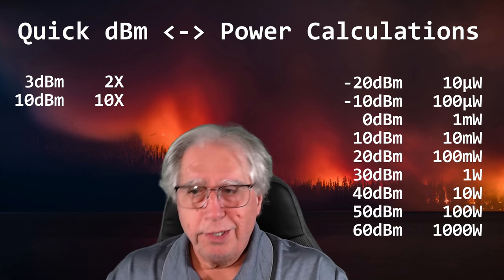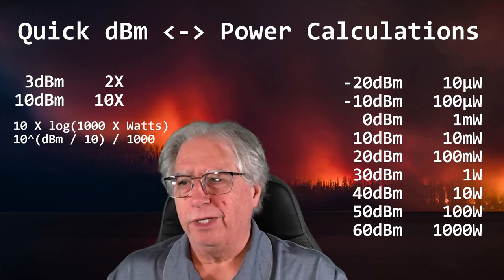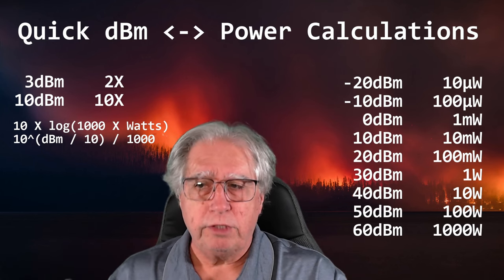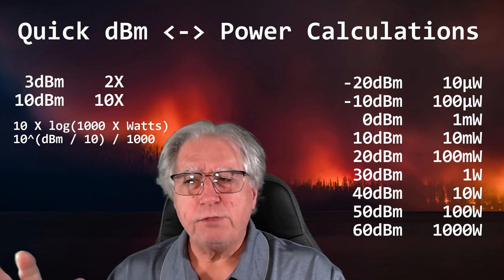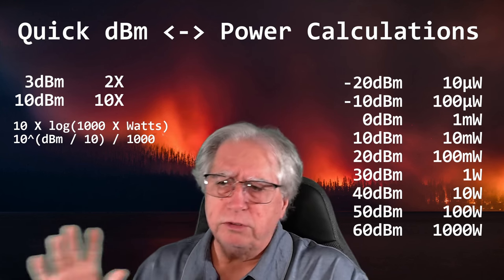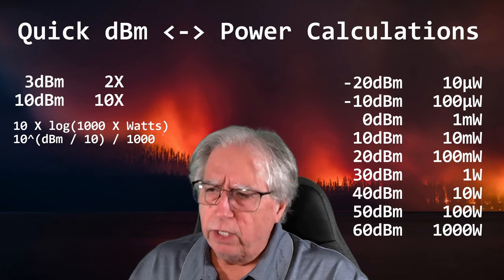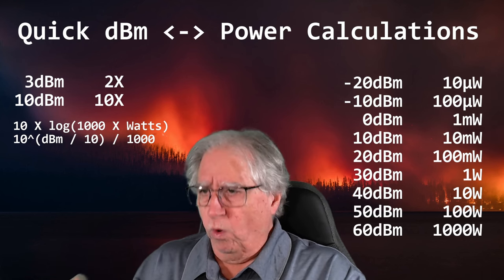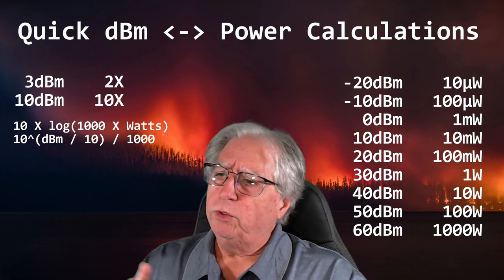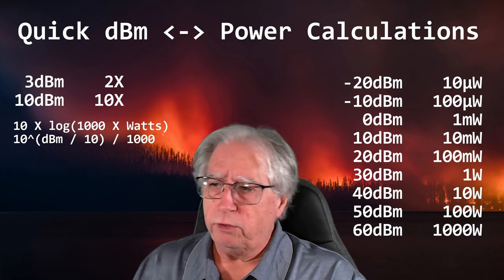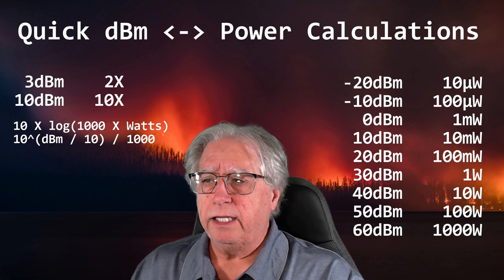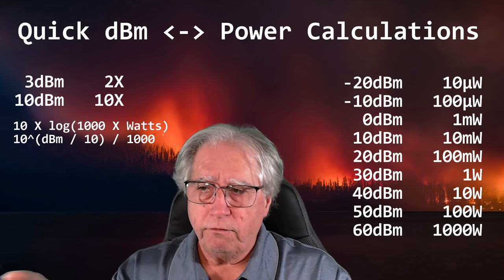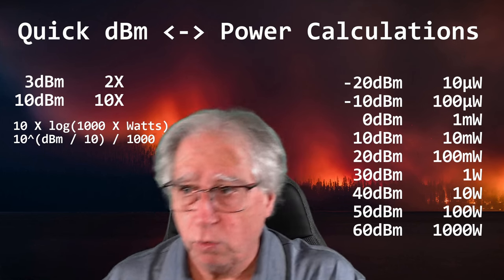Here are the formulas for reference. We're talking about doing this quickly in your head, so I put them up here so you can grab them and save them. To determine dBm from watts, take 10 times the log of 1,000 times your wattage. To reverse it, take 10 to the power of your dBm divided by 10, then divide by 1,000 to convert milliwatts to watts.